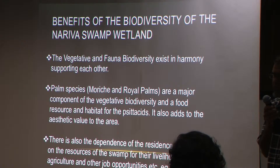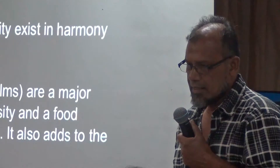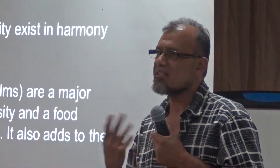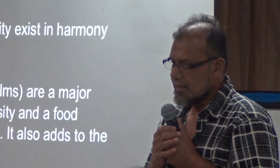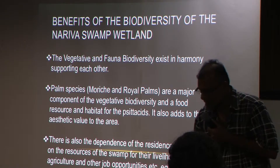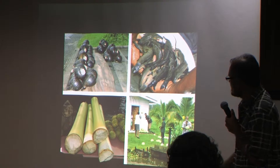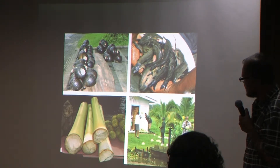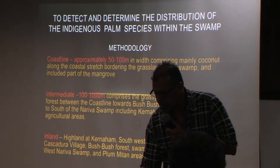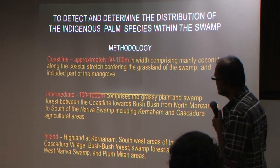The benefits of the Nariva Swamp in respect to the biofauna include various fauna species. The residents also depend on this particular area for their existence, probably accessing things like fish. Even some of them illegally harvest some of these birds and even destroy the palm hearts in order to get the heart for cooking. Agriculture is also a very important part of the swamp.